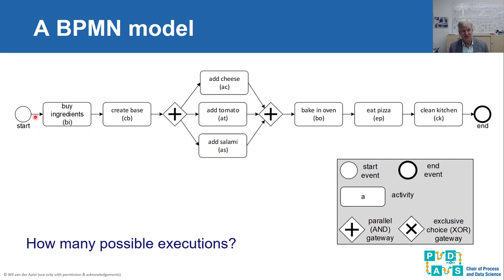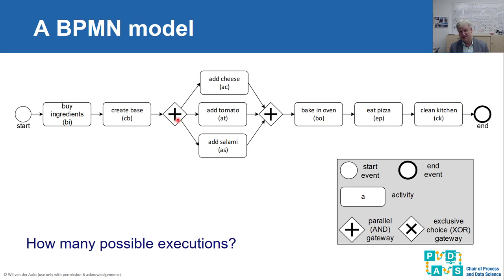When you take an unstructured process and discover a process model, it often looks like spaghetti — hence 'spaghetti models.' If it's more structured, we talk about 'lasagne models.' To introduce process models and corresponding process mining concepts, I start with a BPMN model describing the preparation of a pizza. In this BPMN notation, we have a start event and an end event, and we execute a sequence of activities: the process starts with buying ingredients, then creating a pizza base. After creating a pizza base, we execute three activities — add cheese, add tomato, and add salami — which can be executed in any order. This is modeled using an AND split and an AND join, indicating no predefined ordering but all three must happen.